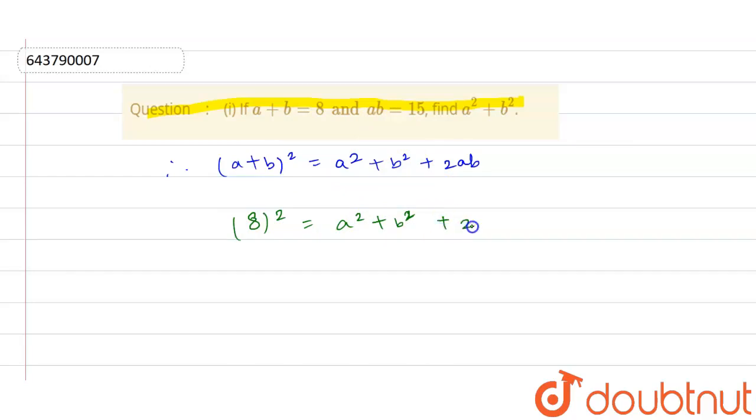And the value of 2ab is given in the question, that is 15. So plus 2 multiply by 15. So 8 square is equals to 64 is equals to a square plus b square plus 30.